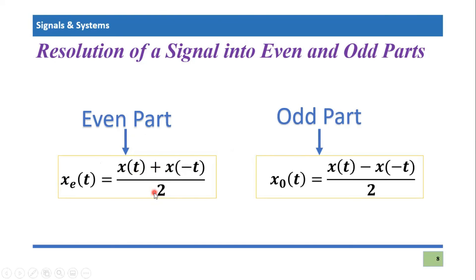and dividing by two to get the even part. For the odd part, we subtract the time reversal from the original signal and divide by two. These are the two main equations used to evaluate the even and odd parts of a signal.